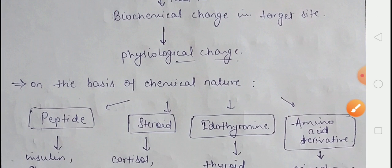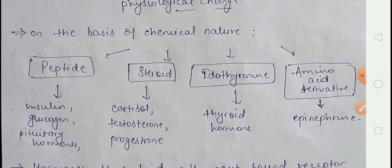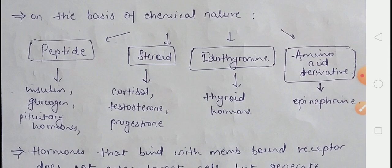On the basis of chemical nature, hormones are of four types: (1) peptide hormones — such as insulin, glucagon, pituitary hormones, and hypothalamic hormones; (2) steroid hormones — such as cortisol, testosterone, estradiol, and progesterone; (3) iodothyronines — which include the thyroid hormones; and (4) amino acid derivatives — such as epinephrine.